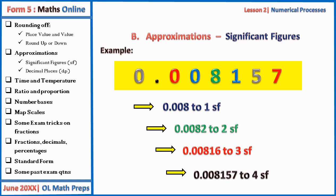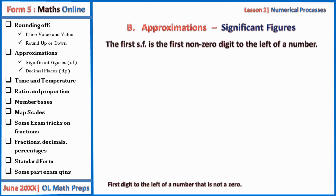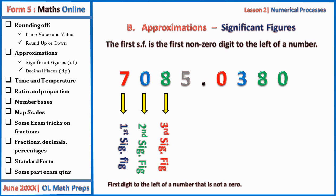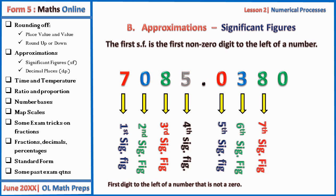To write this number to five significant figures, just add a zero after the seven. Another example: 7085.0380. The first significant digit is seven, because it is the first digit that is not a zero. The second significant digit is zero — this zero becomes significant because it is after the first significant figure. Then eight is the third significant figure.